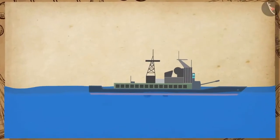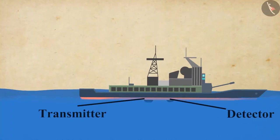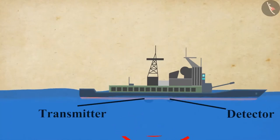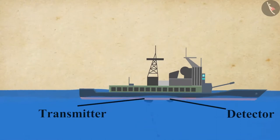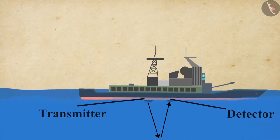The device consists of a detector and a transmitter, and it is installed in a boat or a ship. The transmitter produces and transmits ultrasonic waves. These waves strike the objects on the seabed and get reflected back to the device, which is then sensed by the detector.